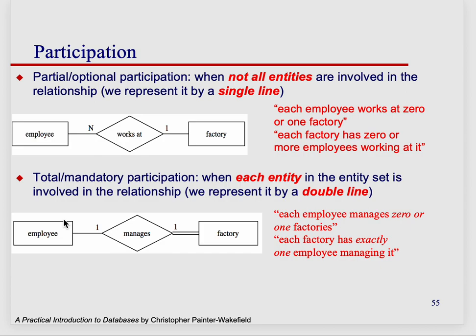For example, if we look at the first case, here we have the relationship between employees working in a factory. It reads: each employee works at zero or one factories. Because it's a one, but it's zero or one. And if we read it backwards, it's each factory has zero or more employees working there. And that's okay in this scenario.